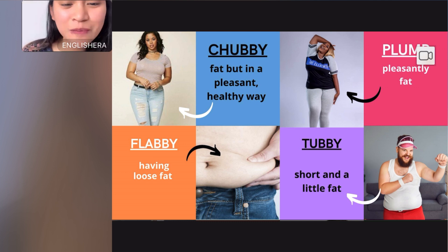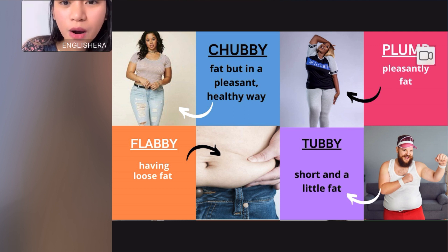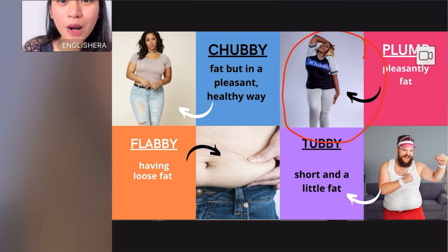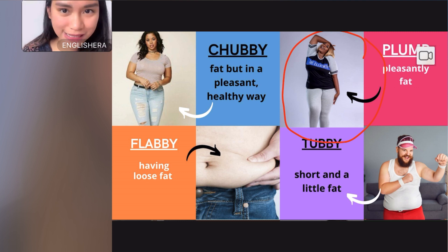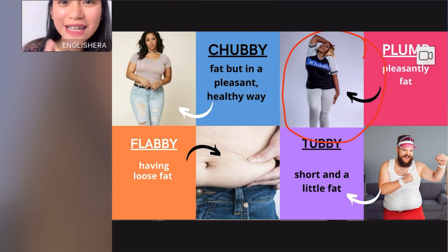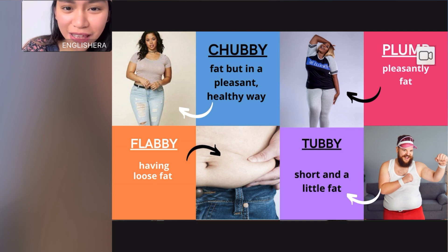If a person looks attractive even if she is heavy, we can say that the person is 'plump.' Plump means pleasantly heavy. It's less offensive than the word fat, so we can use plump to describe someone who is heavy but looks pleasant and attractive.